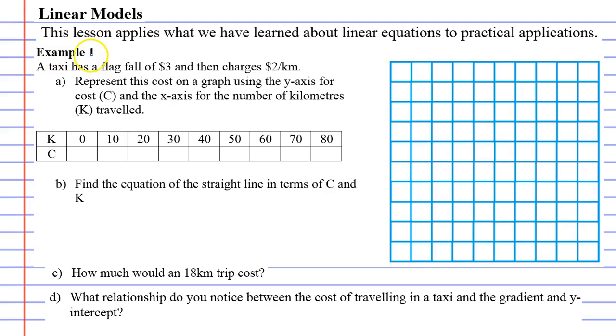Example one says that a taxi has a flag fall of $3 and then charges $2 per kilometer. In case you're not sure what this means, flag fall is the initial charge. So even if you just hopped into a taxi and traveled 0 kilometers, you would get charged $3 because that's what they charge as soon as you get in. They then charge $2 per kilometer. If you traveled 1 kilometer, you would be charged $2 for the kilometer plus the flag fall of $3, or $5 just to travel 1 kilometer in a taxi.